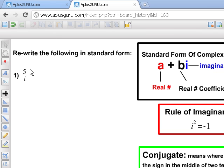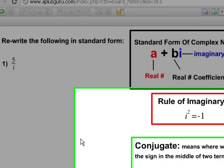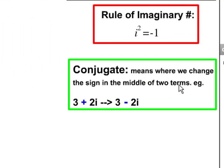We have to basically multiply the numerator and the denominator by the conjugate of the denominator, which is i right now. What does a conjugate mean? A conjugate means where we change the sign in the middle of two terms.